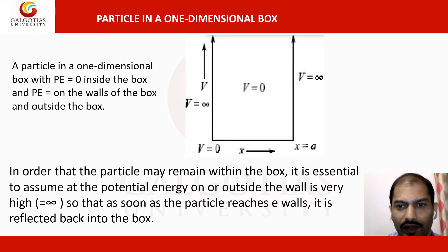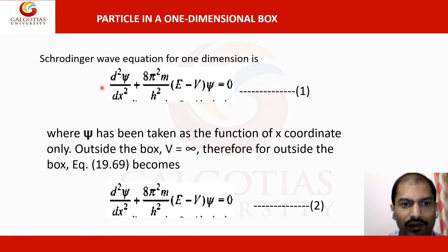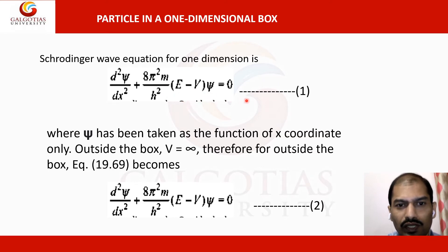As per the Schrödinger wave equation — already discussed for three coordinates — for a one-dimensional box along one axis, the equation is: d²ψ/dx² + (8π²m/h²)(E − V)ψ = 0, where ψ is the wave function taken as a function of the x coordinate only.